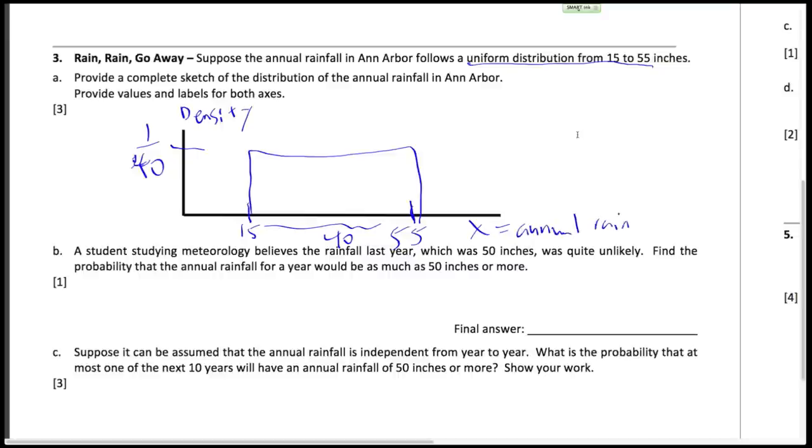Annual rainfall in inches. Okay, so now we want to know the probability that the annual rainfall for a year would be 50 inches or more. So we want the probability that x is more than or equal to 50.